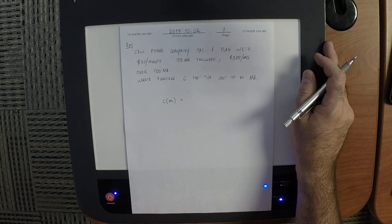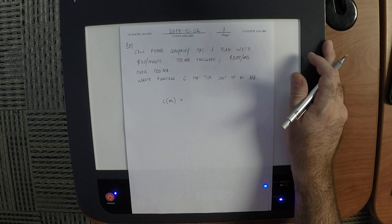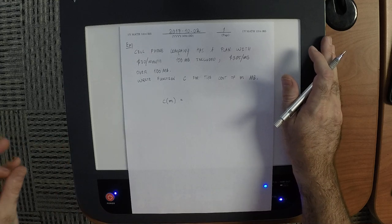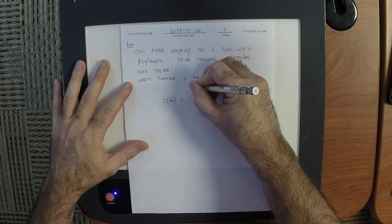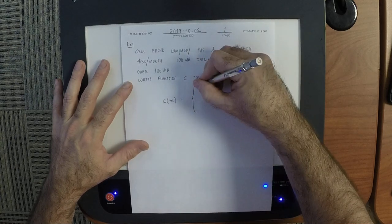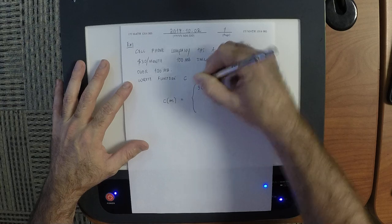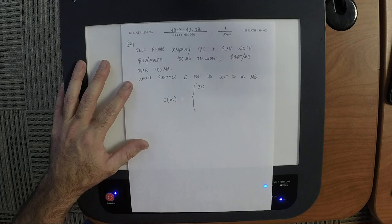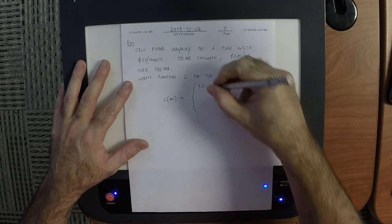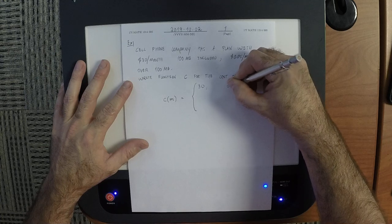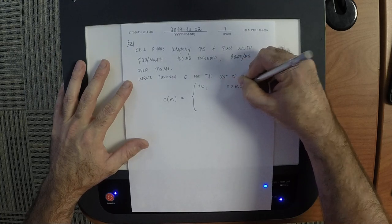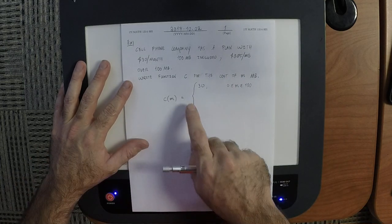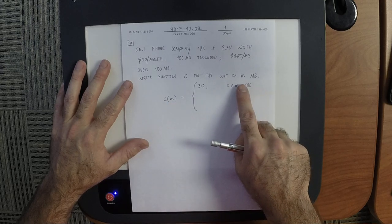So for zero megabytes it's 30, for one and a half it's 30, for 77 it's 30, so for a lot of times it's 30. So as a result, one of the clauses will be that it's 30. So when, for what values of M is it 30? So, zero to a hundred, zero less or equal M less or equal 100, so that is to say that for any M value between zero and a hundred the cost is 30.